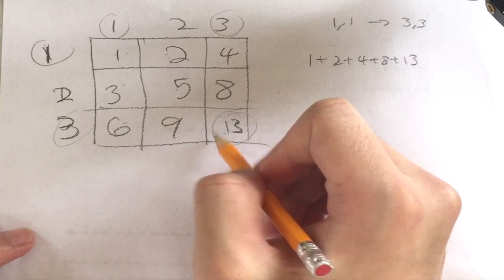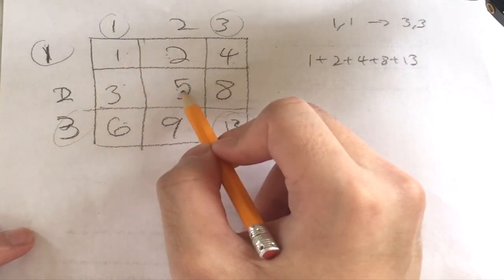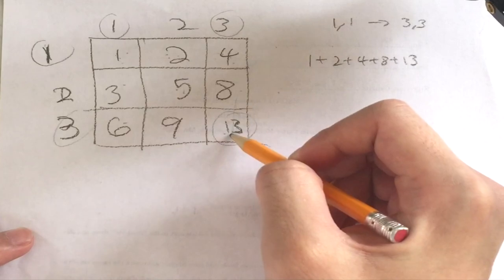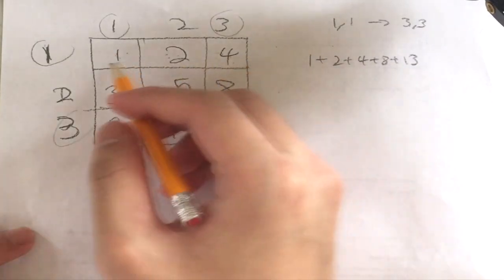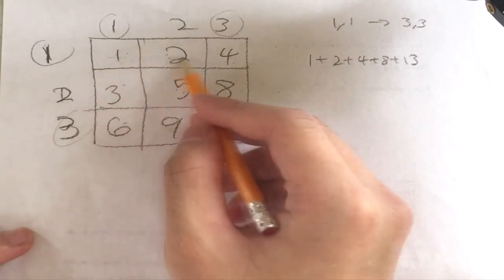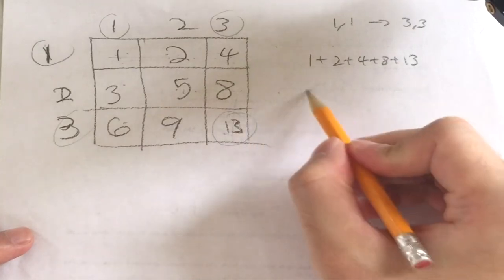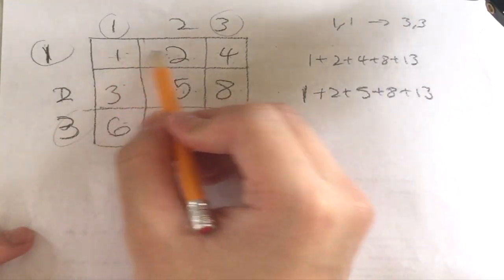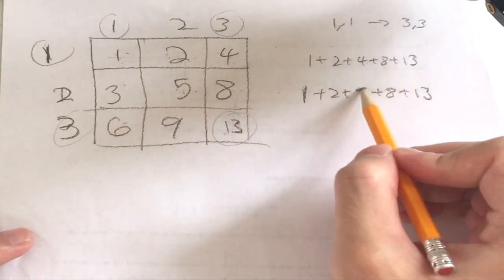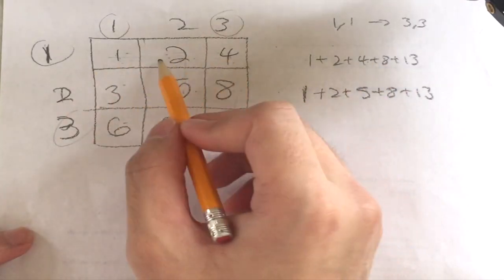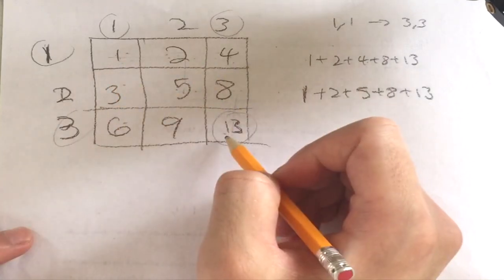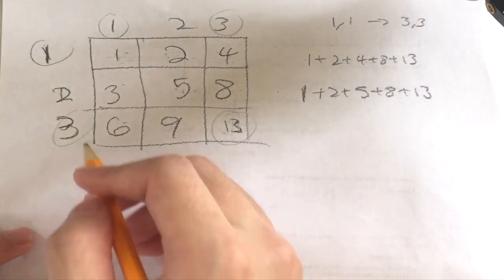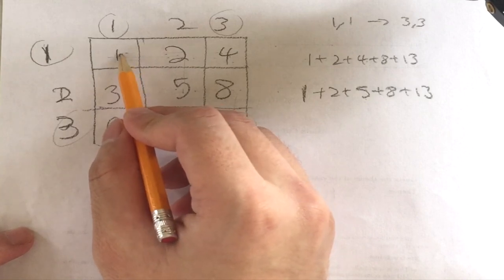Now instead of going all rights and then down, let's go right once, then down once, then right again, then down — right, down, right, down. That path gives us 1 + 2 + 5 + 8 + 13. Notice this sum is exactly one more than the previous path! So going down one step earlier increases the sum by one.